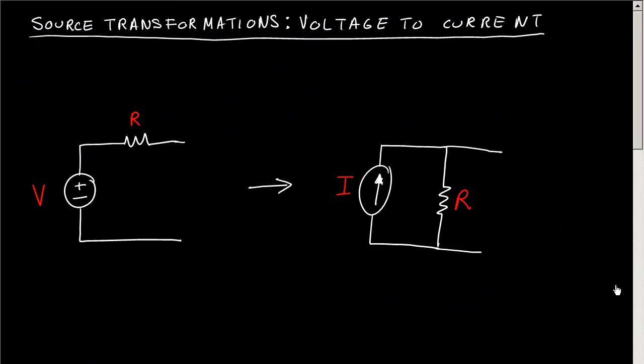So let's say you have a voltage source V in series with some resistor R. The source transformation rule says that you can change that to a current I in parallel with the same resistor R.